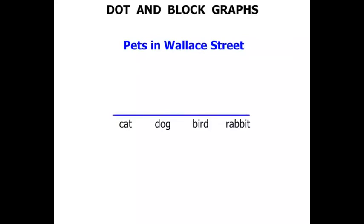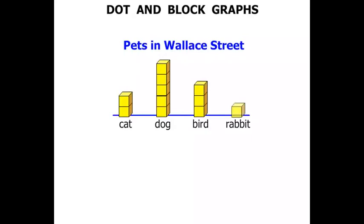Pets in Wallace Street. We are going to have a look at a block graph. Because we are dealing with pets, we expect to see some names of pets. The block graph has a series of blocks — you can see how we are building this up.